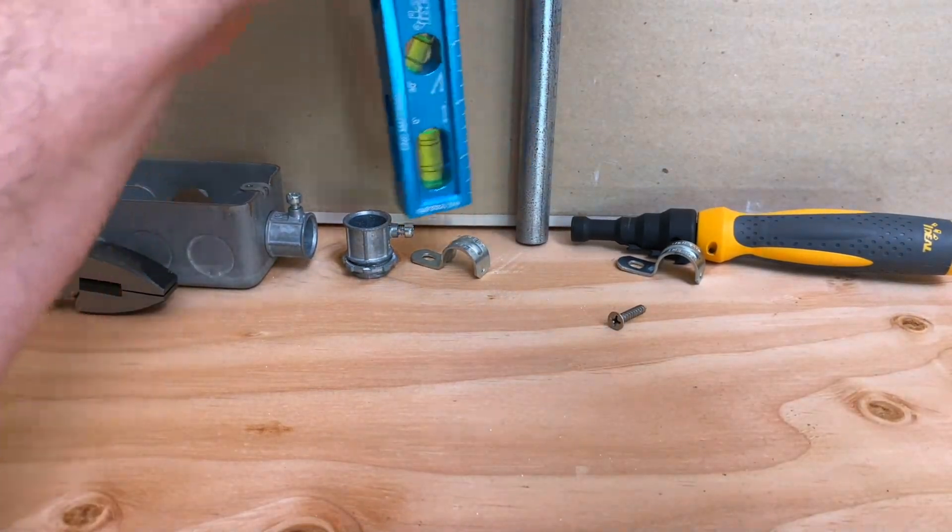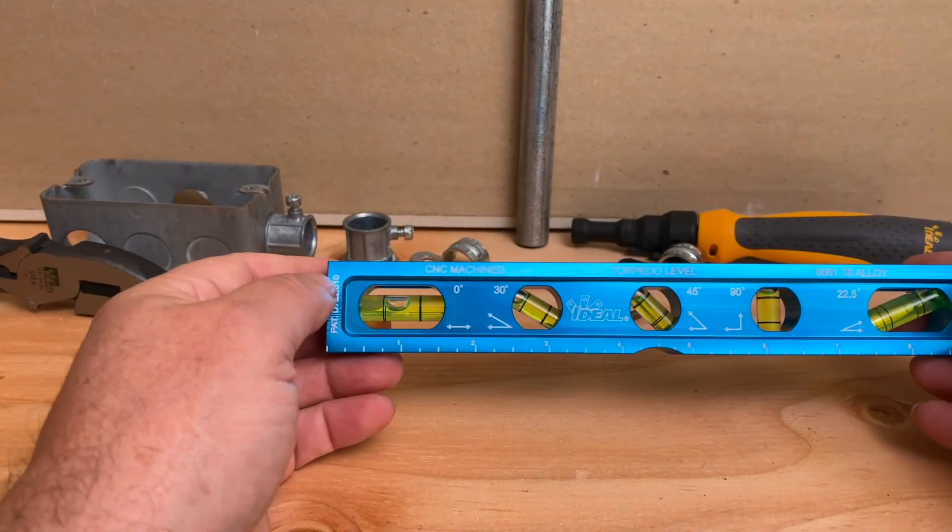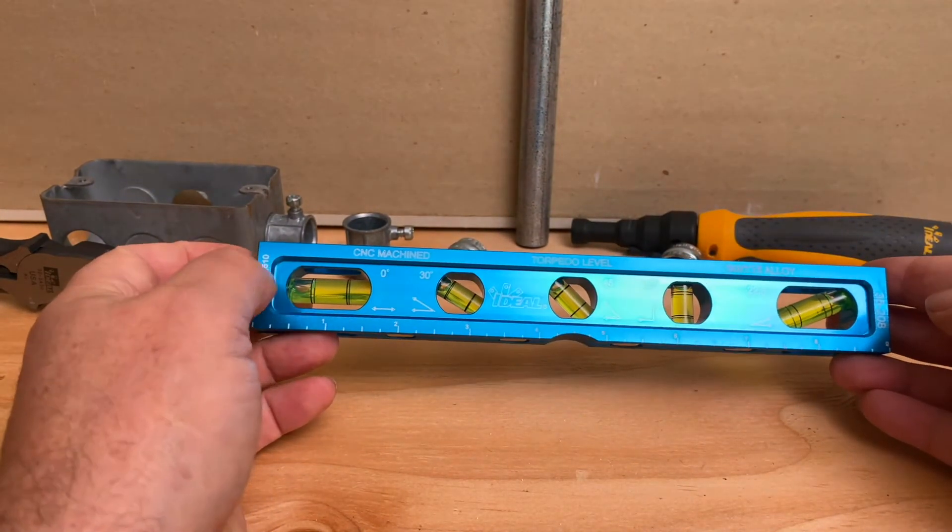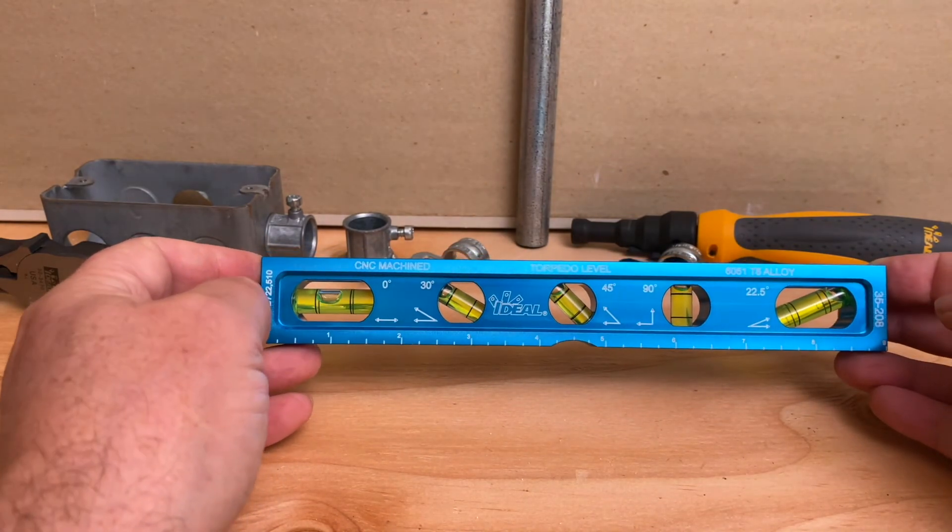It can work with wood so whatever you're doing whether you're a carpenter, electrician, trim work, etc. This level is going to be good for you and with the additional angles if you have to do saddles or other straight cuts, it's perfect for that.